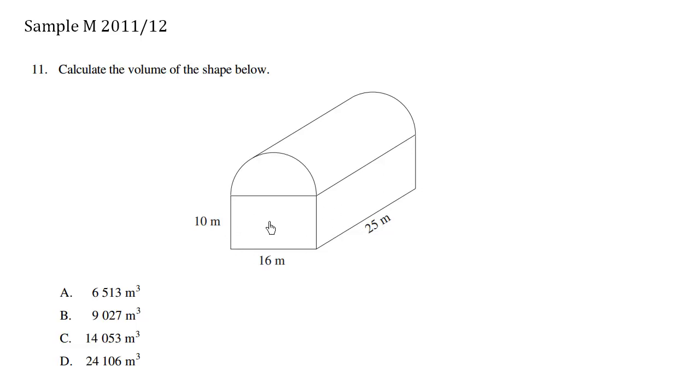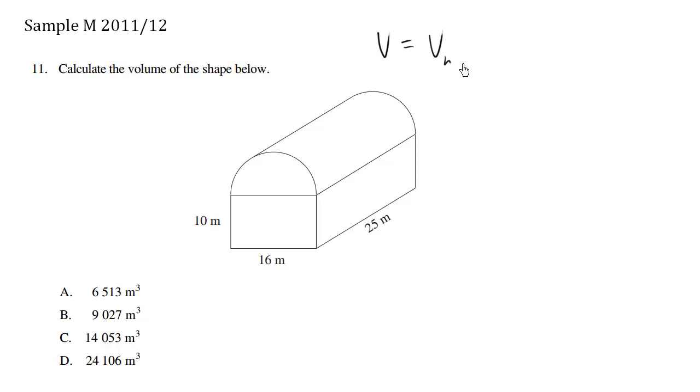So we know how to calculate the volume of this box. So we have here the volume of this shape is equal to volume of the half cylinder plus the volume of the box.